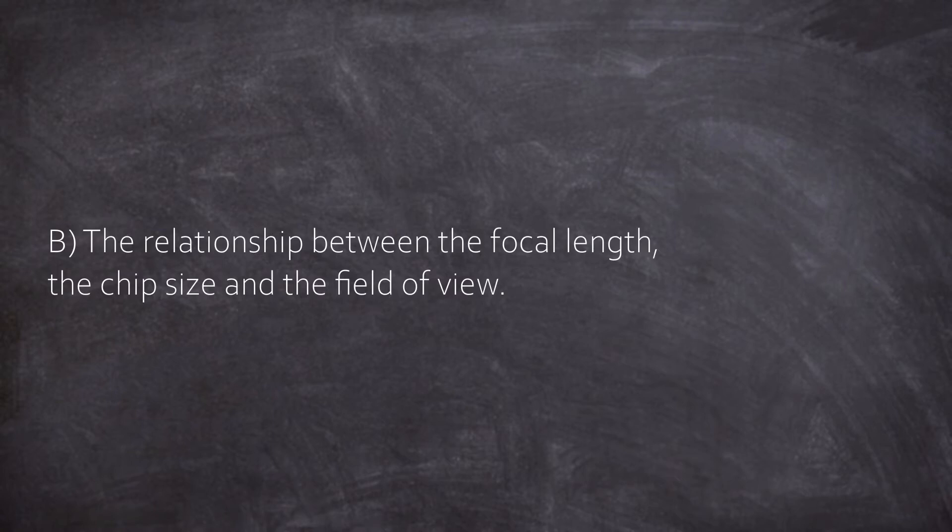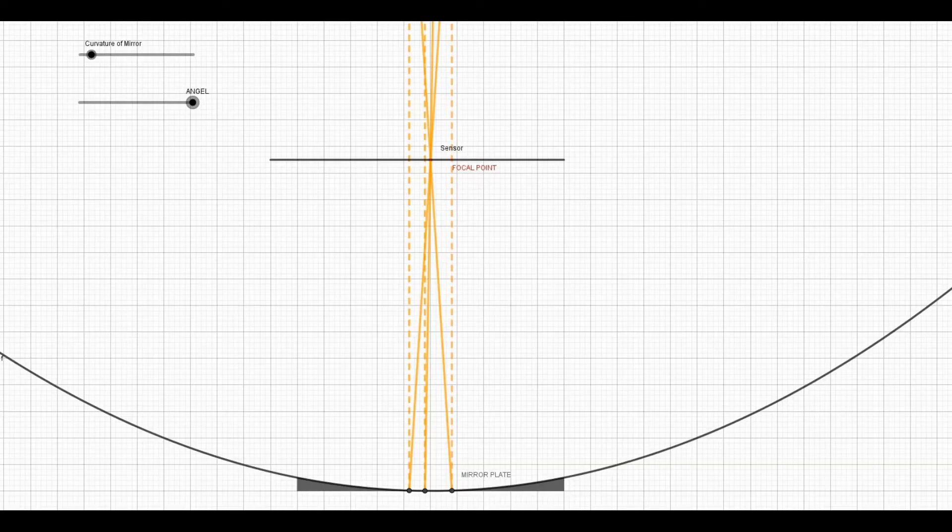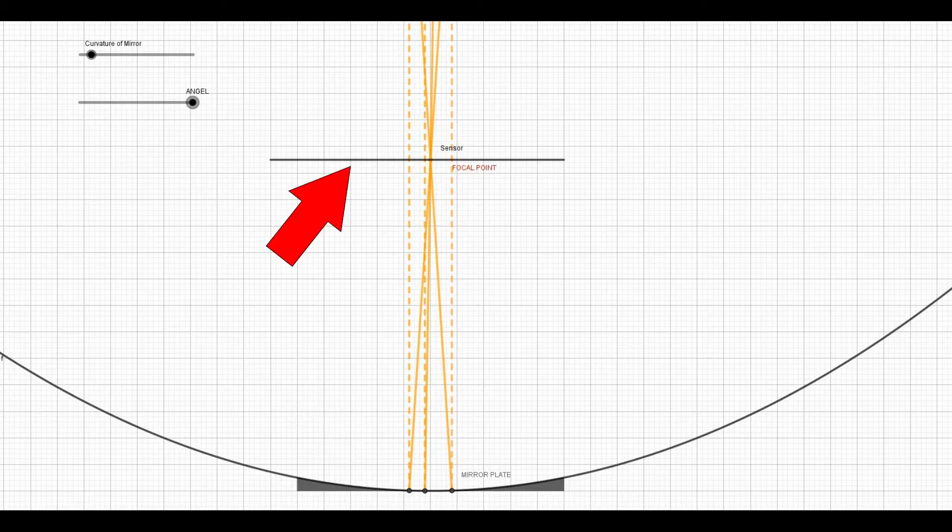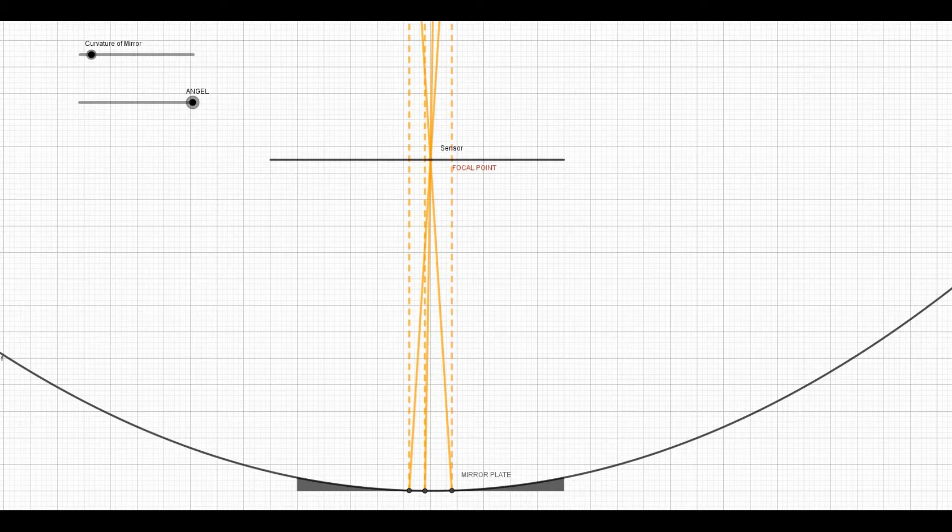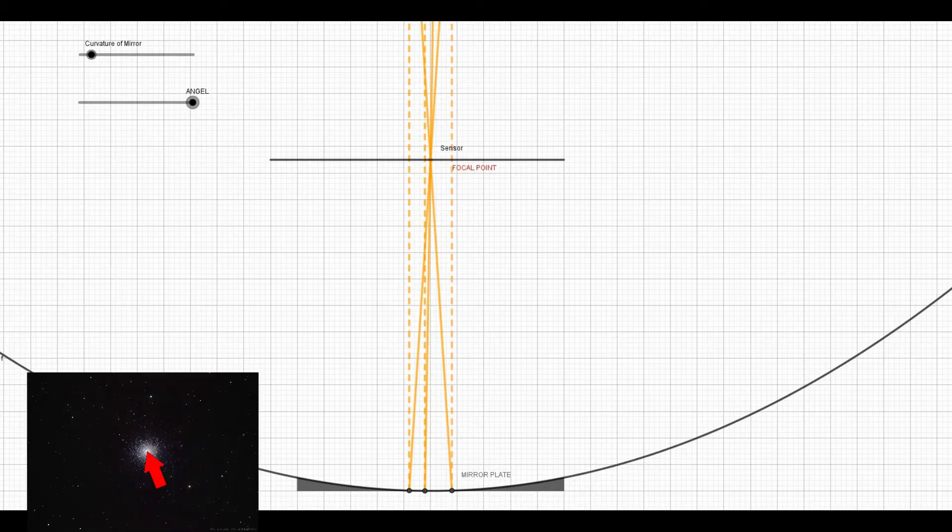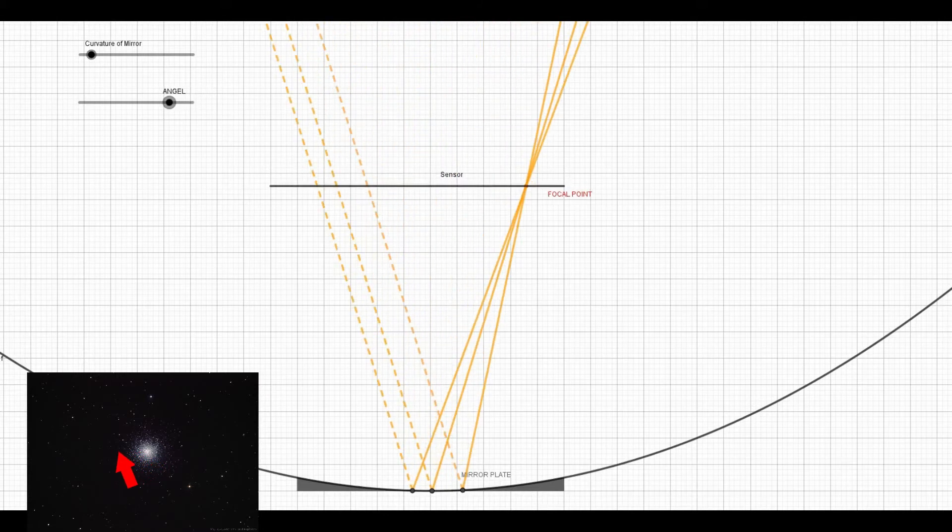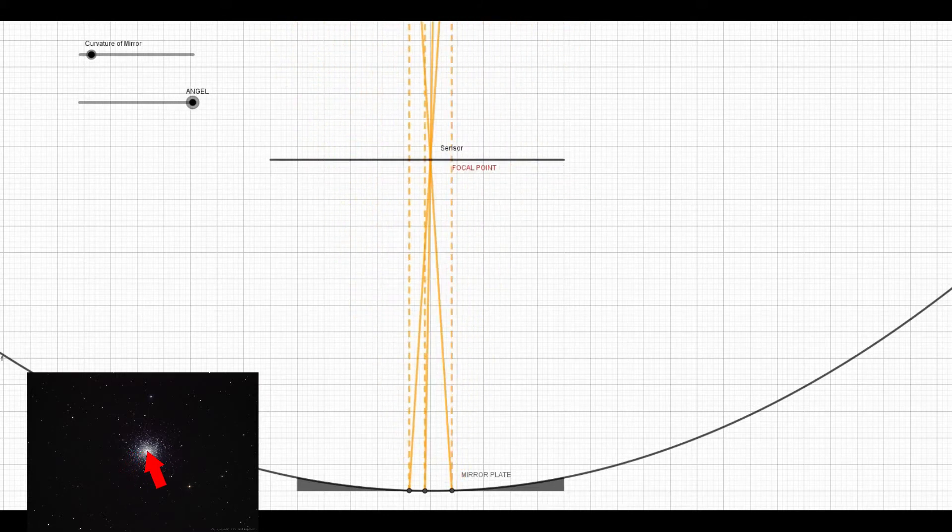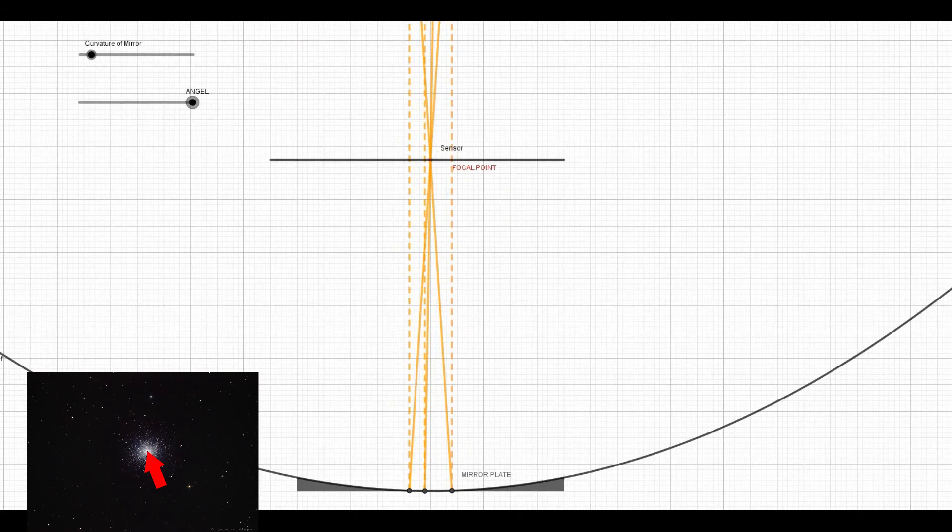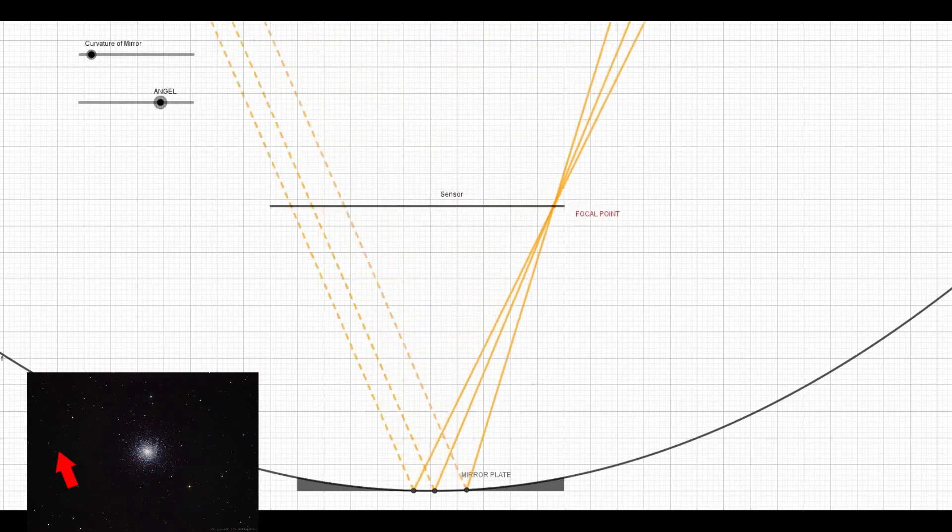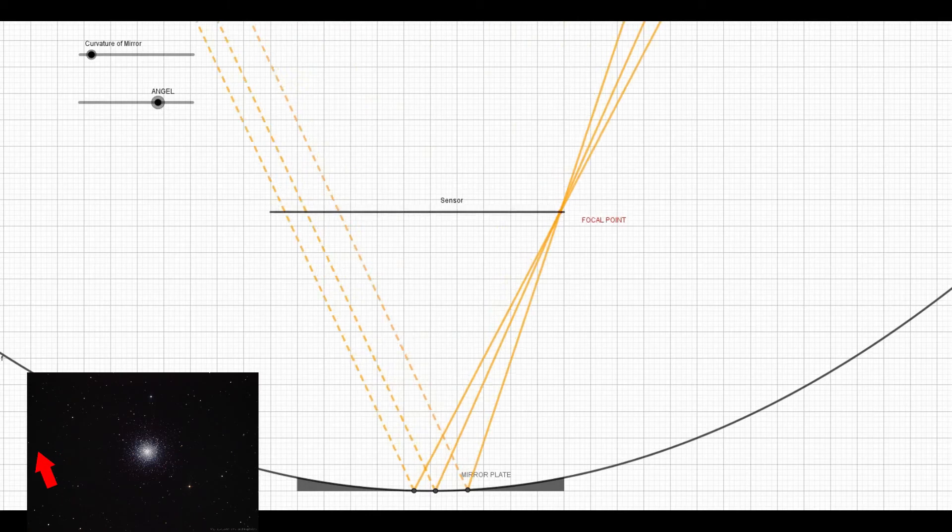With that in mind, we can go to the second point: the relation between focal length, chip size, and field of view. See, here is a simulation of a reflector telescope, and we place a sensor in the focal plane so we are always in focus. Then we can alter the angle of the incoming light. This is light from the central region, and this is light from the corners. If we alter the angle, we see that the focal point shifts. That's, I mean that's clear. But with a fixed chip size like this, we can only go like this far, and then we reach the edge of the sensor and everything else is lost.